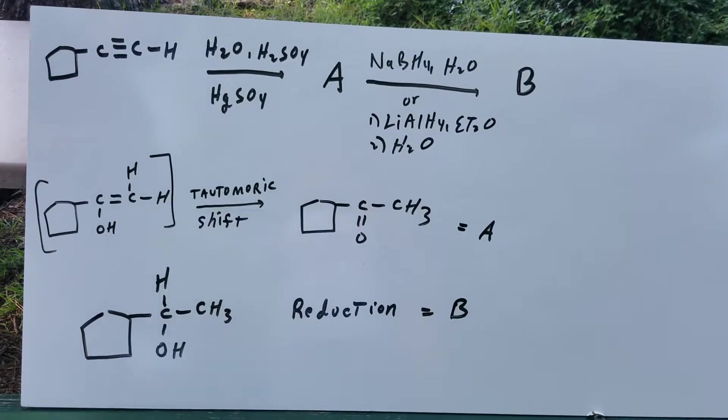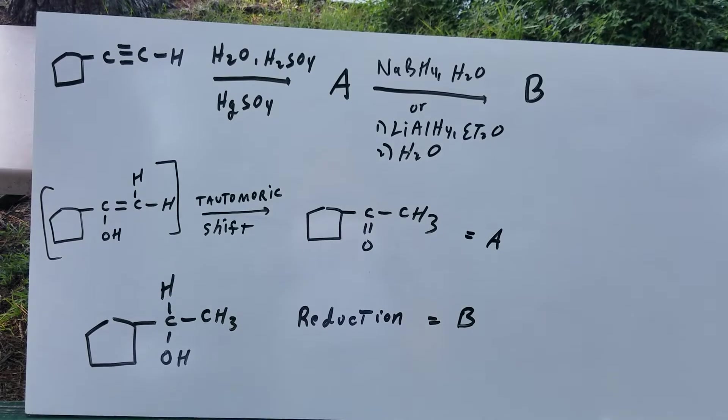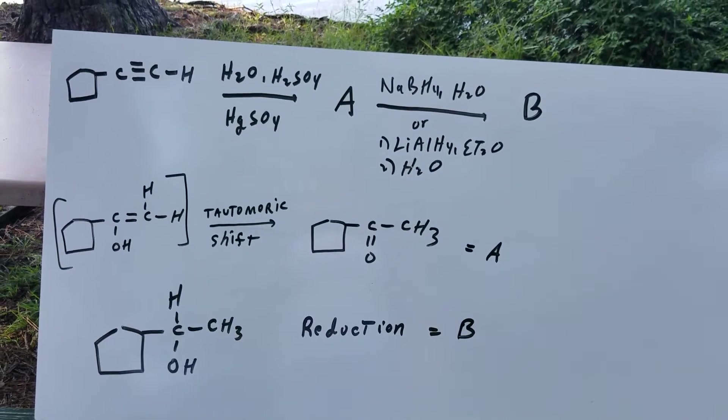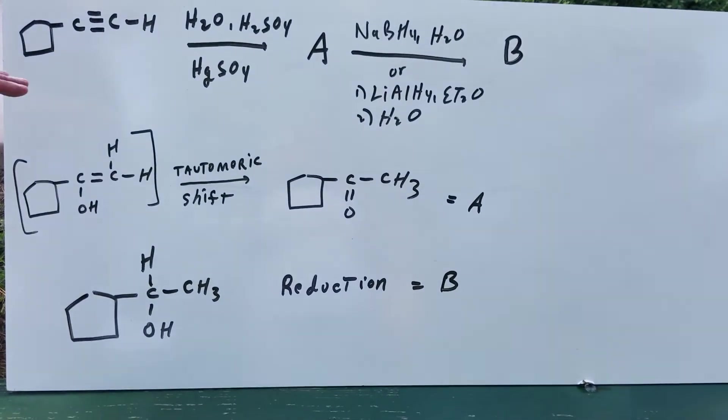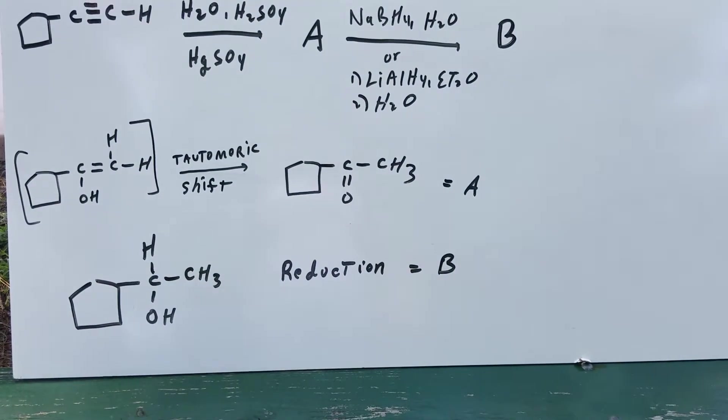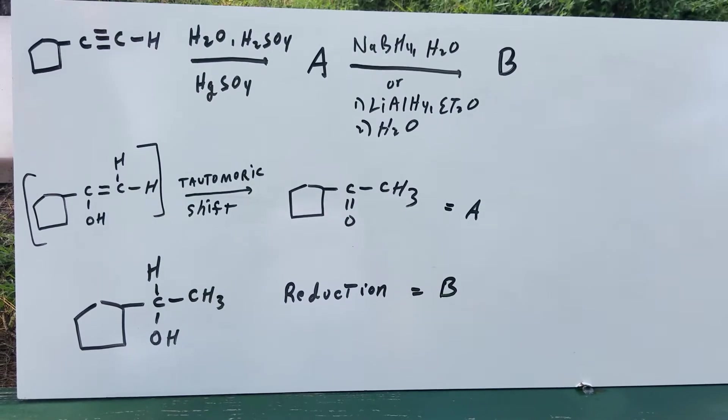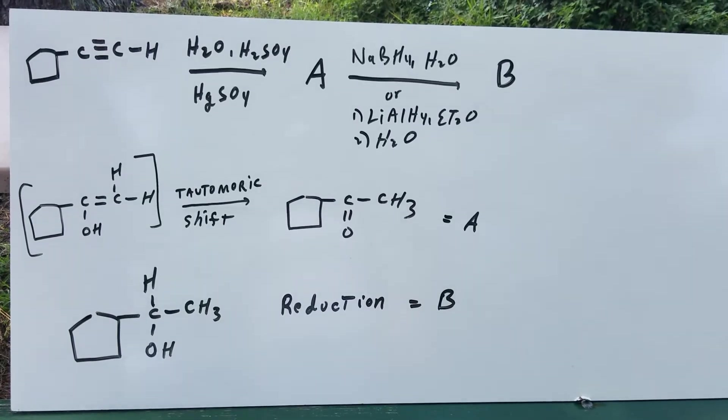Now when I form this, I form what's called an enol. Generally speaking, an enol is not very stable and it's going to undergo a rearrangement. We call this rearrangement, as you can see, a tautomeric shift.